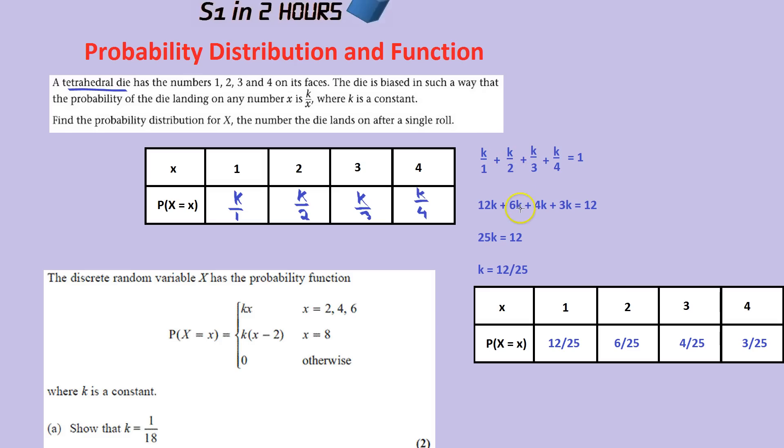12 over 3 is 4K. 12 over 4 is 3K. And 1 times 12 is 12. Adding this up, you get 25K is 12. Dividing both sides, you get K is 12 over 25. Just to recap, we did this because we knew that in a probability distribution, all the boxes have to add up to 1.